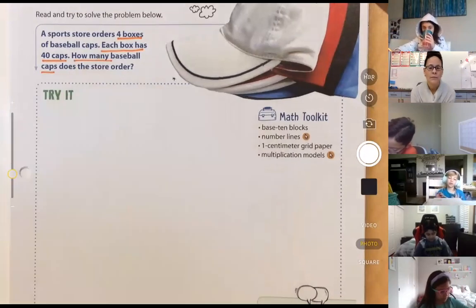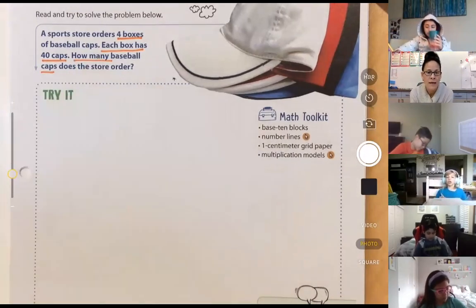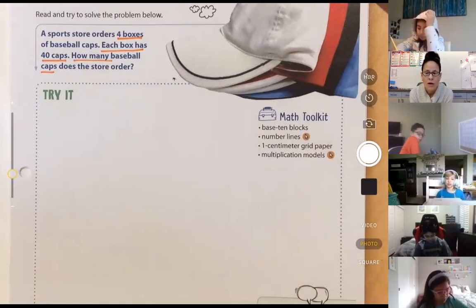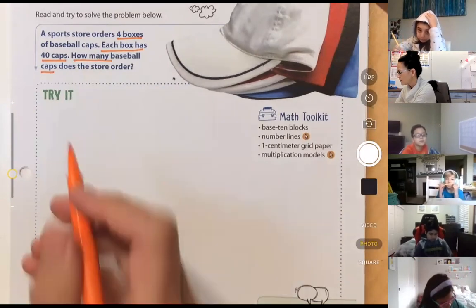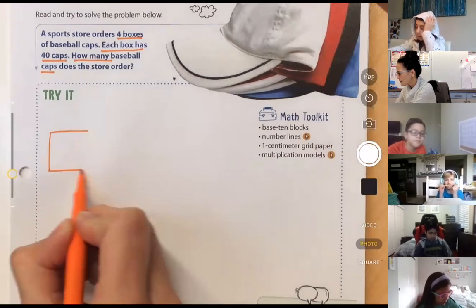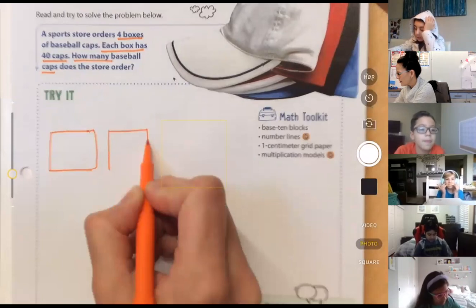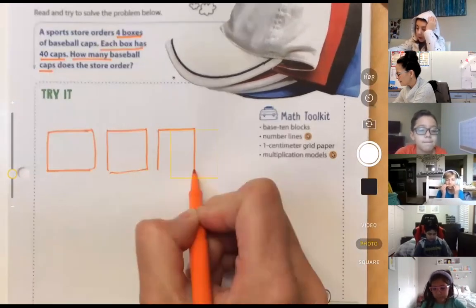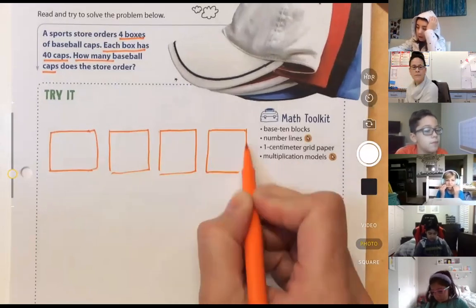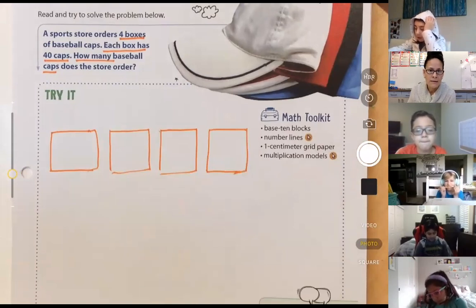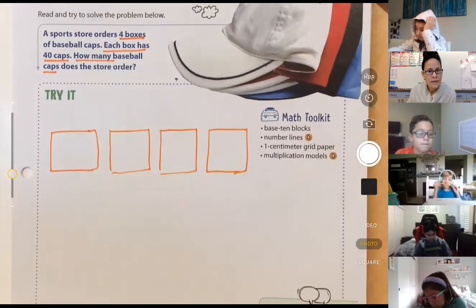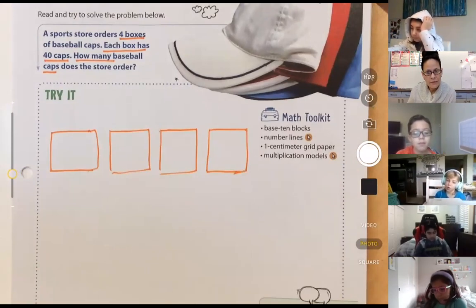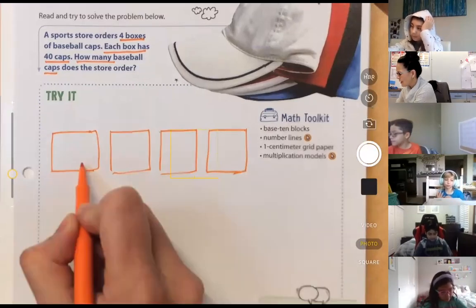How many caps does the store order? So I need to model this in a way that will tell me how many baseball caps total the store orders. Now friends, we know we have four boxes or groups. We can start there. So here is one box, and here is another box, and here is another, and yet another. Okay, four groups or four boxes, right?